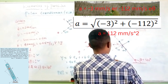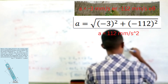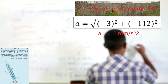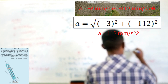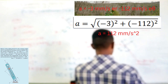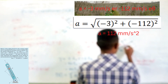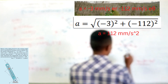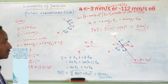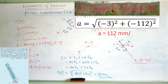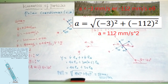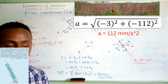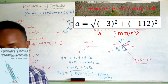The total acceleration is negative in both the radial and angular directions. This completes the question on polar coordinates. Thank you for your attention, and see you. Bye for now.